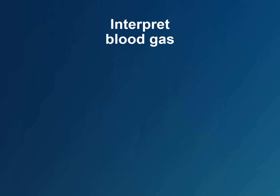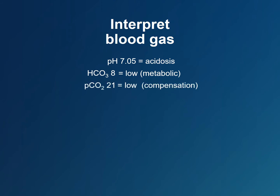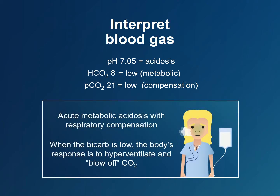Interpret the blood gas: The pH of 7.05 is in the acidotic range, and the bicarbonate is low, so it is a metabolic acidosis. But the partial pressure of carbon dioxide is also low, meaning that Sam is hyperventilating, which is consistent with the tachypnea observed on initial examination. So Sam has an acute metabolic acidosis with respiratory compensation. When the bicarbonate is low from acidosis, the body tries to compensate by hyperventilating to blow off CO2 and return the pH to normal.